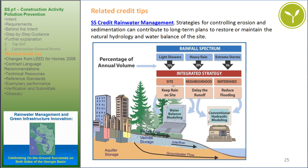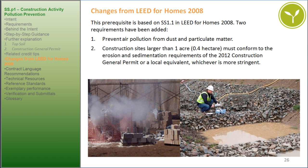Related Credit Tips — SS Credit Rainwater Management: Strategies for controlling erosion and sedimentation can contribute to long-term plans to restore or maintain the natural hydrology and water balance of the site. Changes from LEED for Homes 2008: This prerequisite is based on SS 1.1 in LEED for Homes 2008. Two requirements have been added: one is to prevent air pollution from dust and particulate matter, and two is that construction sites larger than 1 acre (0.4 hectare) must conform to the erosion and sedimentation requirements of the 2012 Construction General Permit or local equivalent, whichever is more stringent.